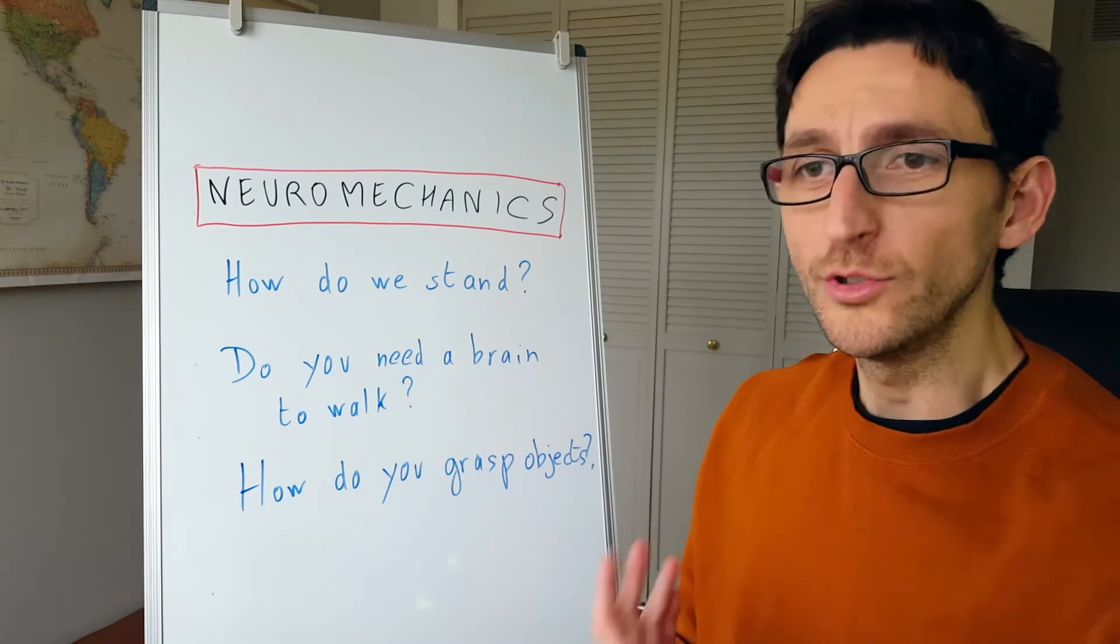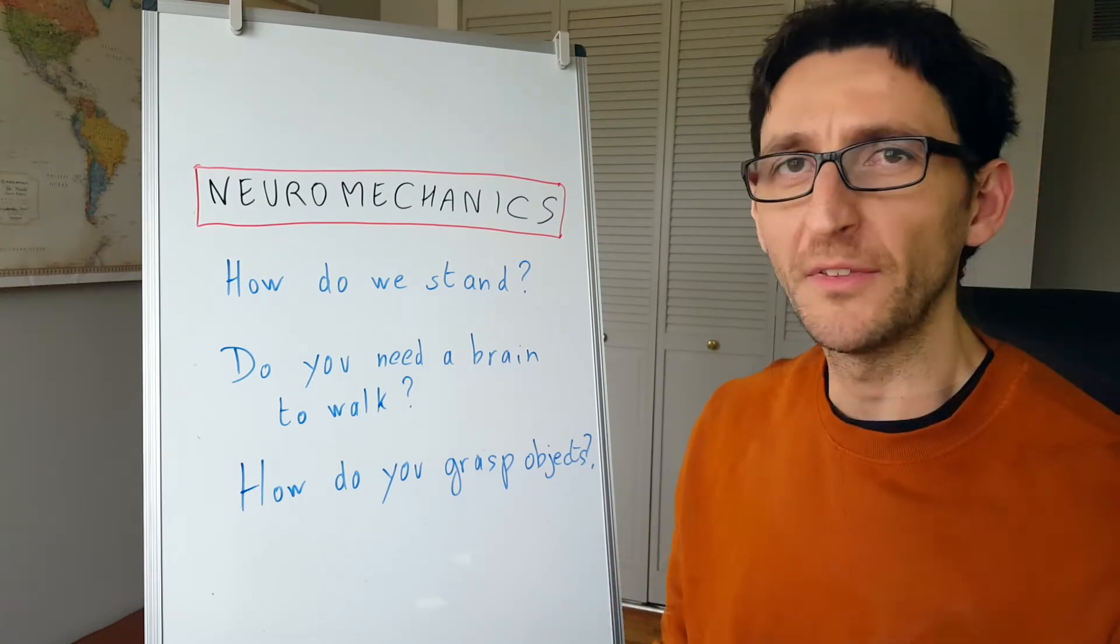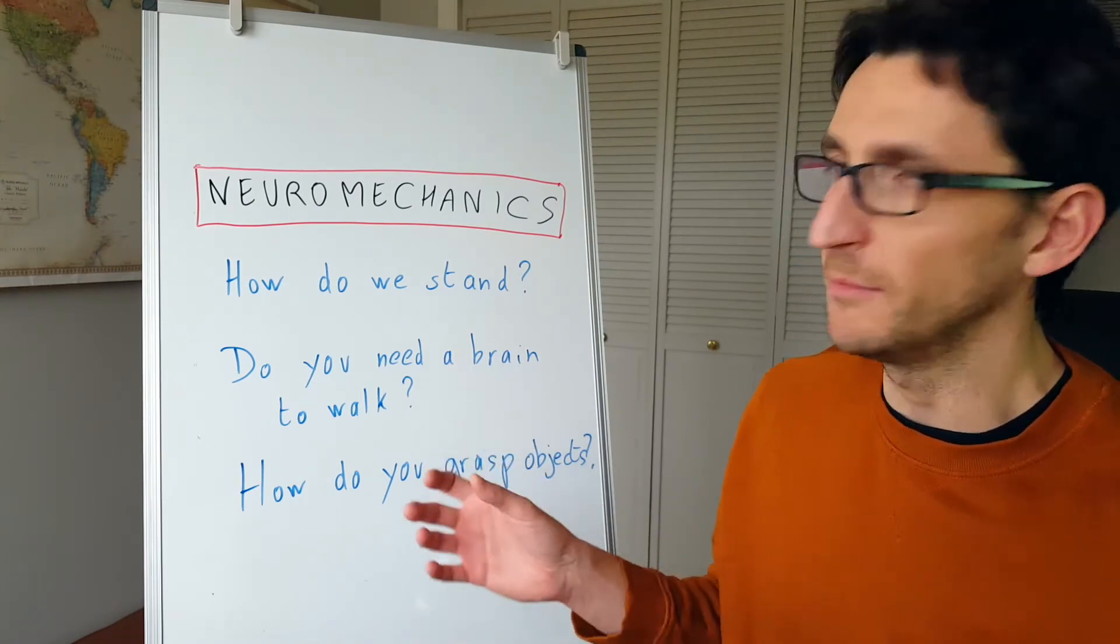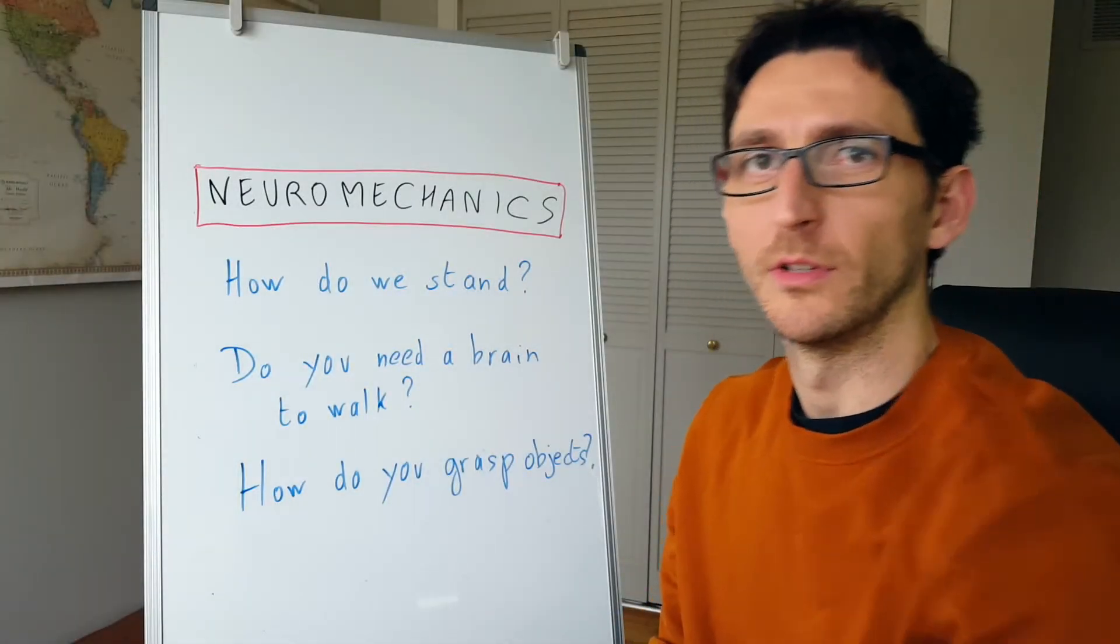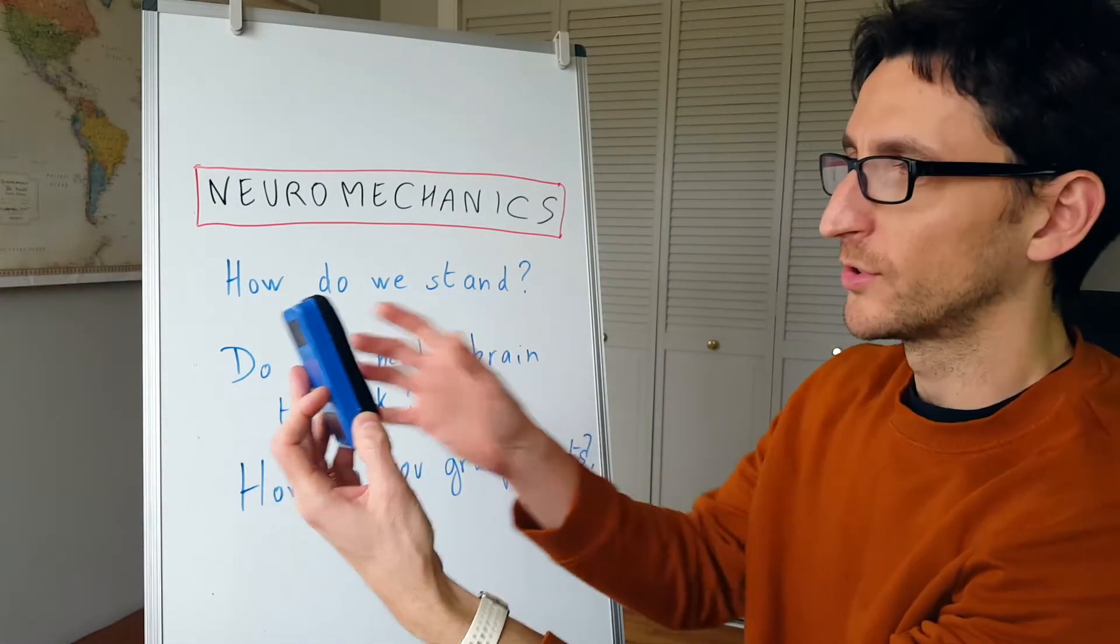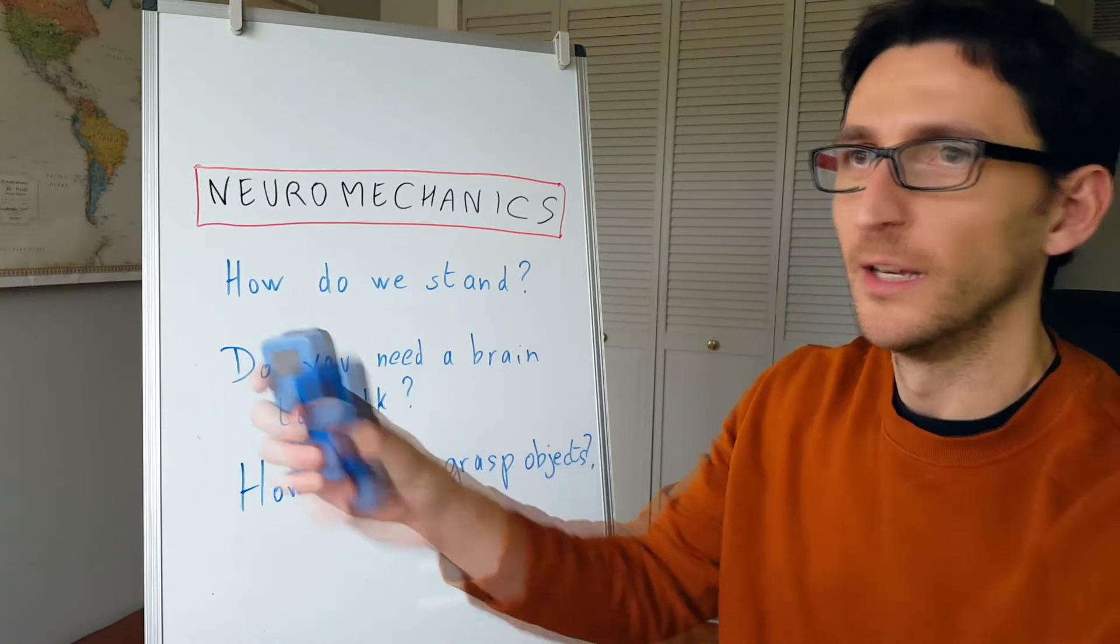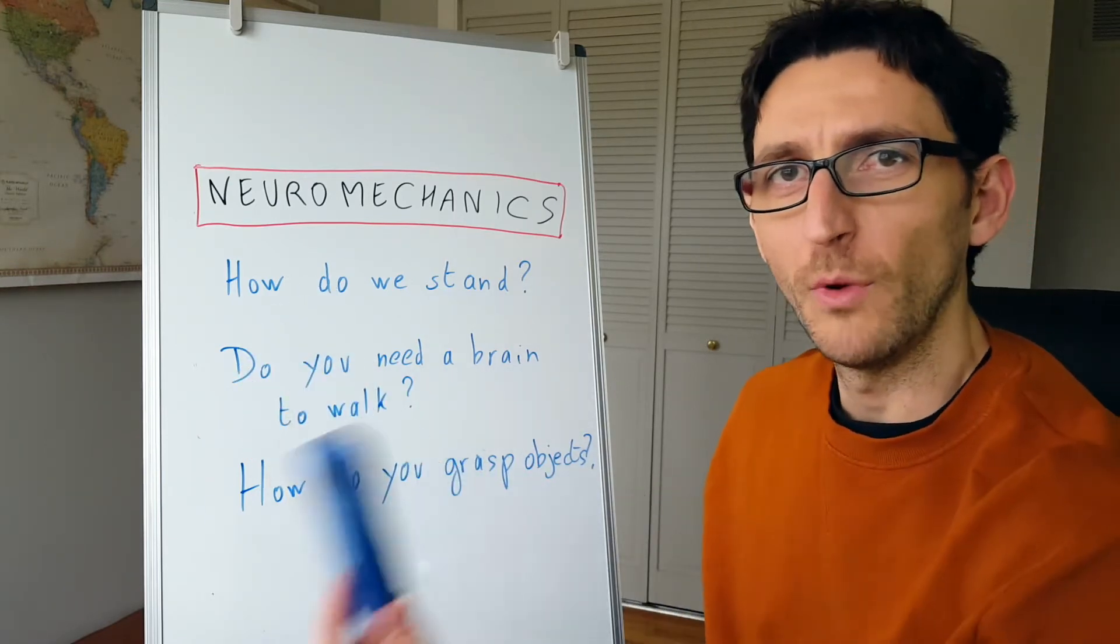The third example is how you grasp objects. You may think about the most simple way to grasp which is like this. If I take, for example, an object in my hand, I will just tend to grasp it like this.